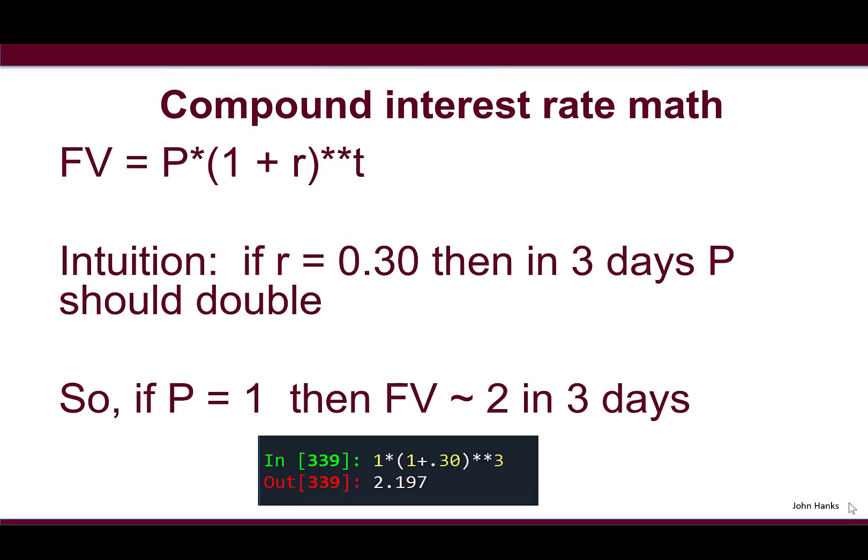Let's talk about the math. This is a common set of problems for compound interest. The general formula is the future value FV = P*(1 + r)**t, where P is principal, r is interest rate, and t is time. I've adopted that equation into our infection rate model.